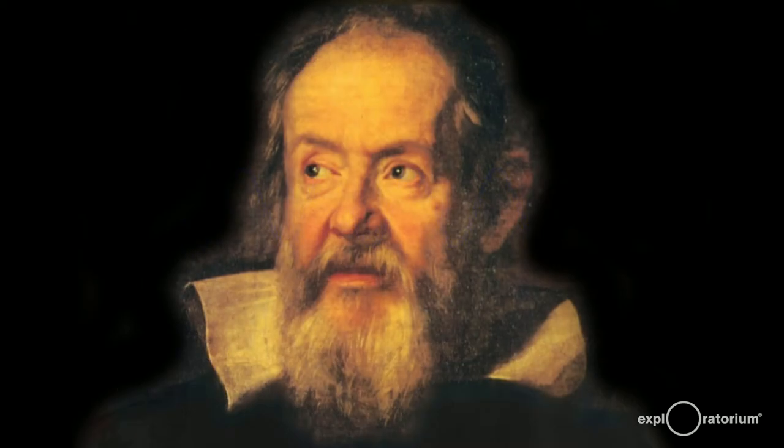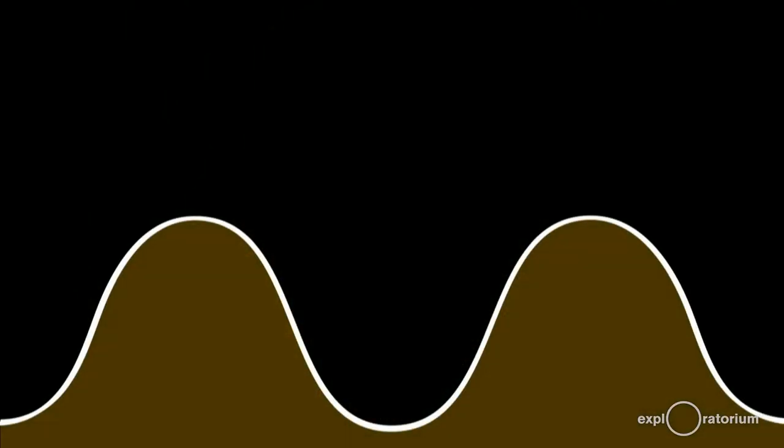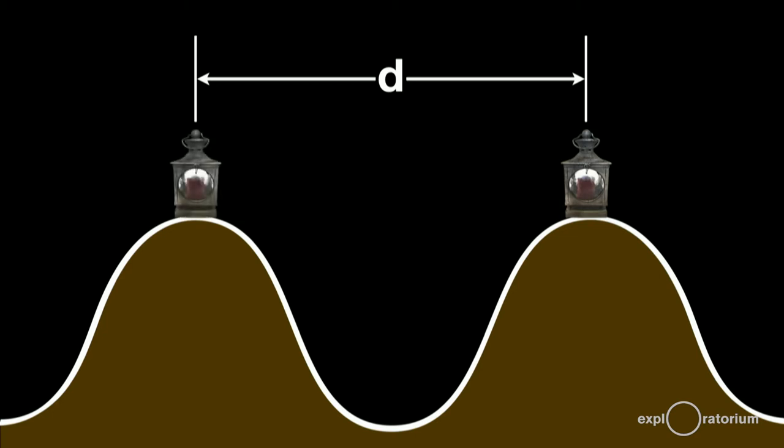Galileo was one of the first to attempt to measure the speed of light. He did this by measuring the distance between two hilltops. Galileo sent his assistant to the far hilltop with a shuttered lantern.